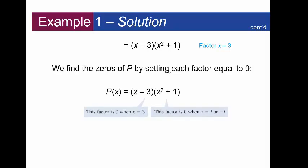Now we find the zeros of this polynomial by setting each factor equal to zero. I'm going to set this equal to zero and solve it. To solve x - 3 = 0, you get x = 3.